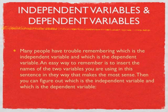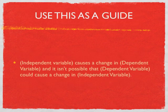Many people have trouble remembering which is the independent variable and which is the dependent variable. But an easy way to remember this is to insert the names of the two variables you are using in the sentence in the way that makes the most sense. Then you can figure out which is the independent variable and which is the dependent variable — if the independent variable causes a change in the dependent variable, and it isn't possible that the dependent variable could cause a change in the independent variable.